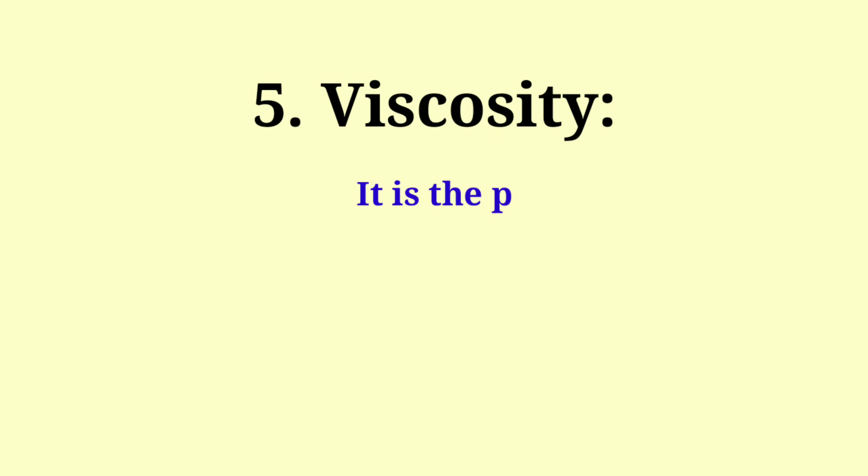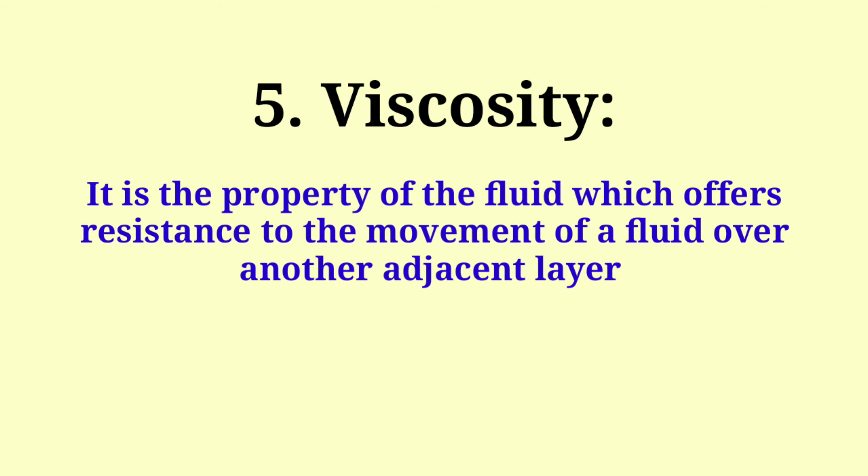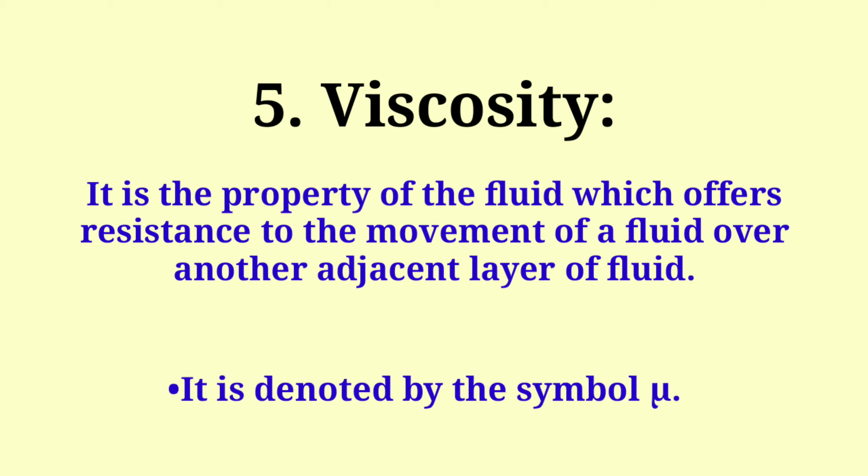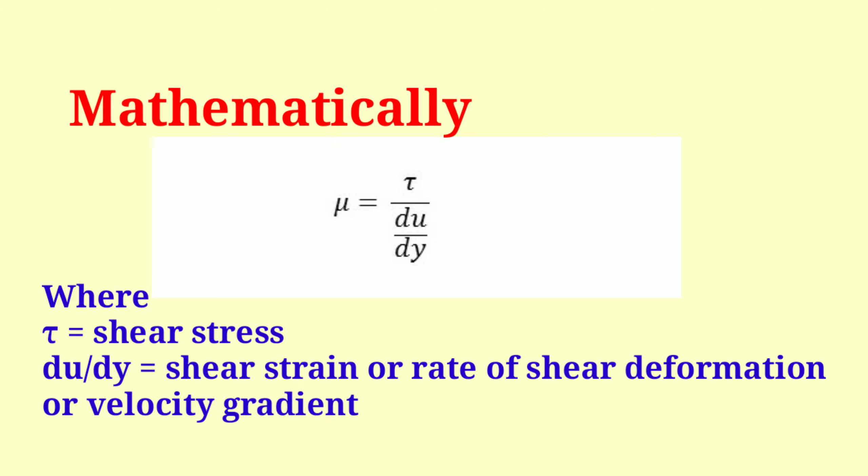Viscosity is the property of a fluid which offers resistance to movement of one fluid layer over another adjacent layer. It is denoted by the symbol μ (mu). Mathematically, μ = τ/(du/dy), where τ = shear stress, and du/dy = shear strain or rate of shear deformation or velocity gradient.